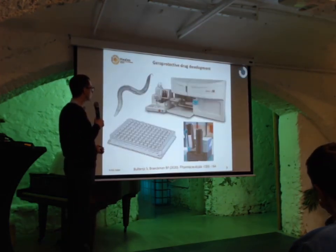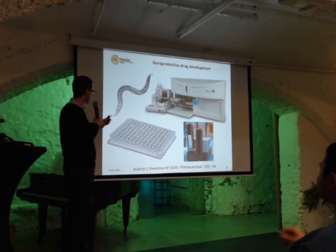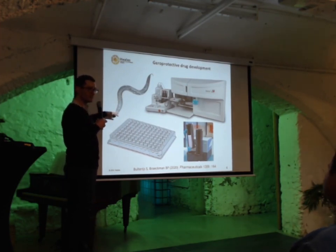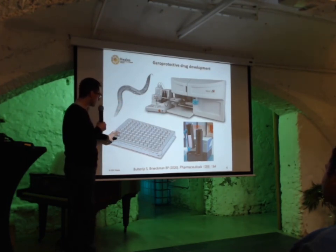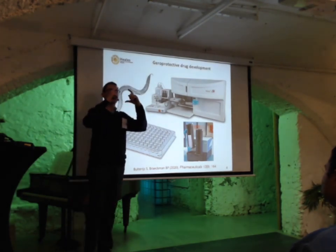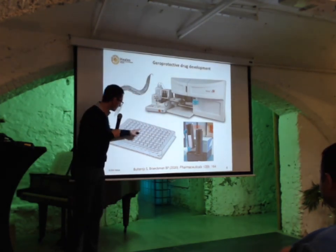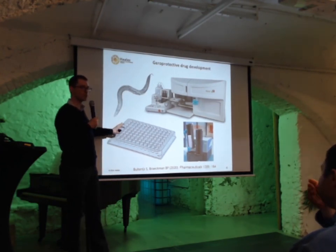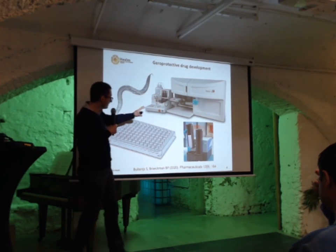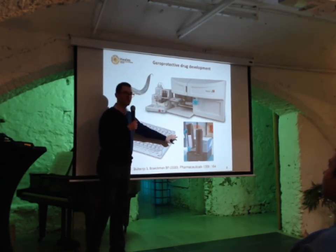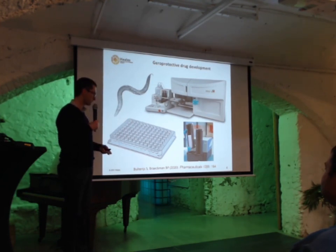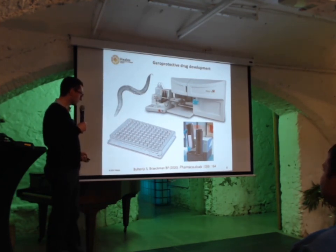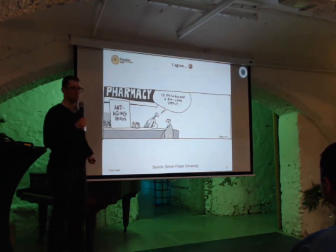A solution for that problem is to use a simpler organism — the worm. It's about one millimeter in length, so this is a huge scale blow-up. The benefit is you can grow it in these plates, which are about this size and contain 96 wells. In each well you can put some worms in a different compound, so in one plate you can already test almost a hundred drugs. This is amenable to automation, which you can't do with mice. I wrote a paper on that, and that's basically my presentation.